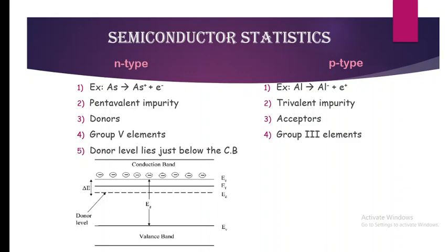In the diagram we can observe there is a valence band and a conduction band, with a donor level just below the conduction band, and the Fermi level lies in between the bottom of the conduction band and the donor level.